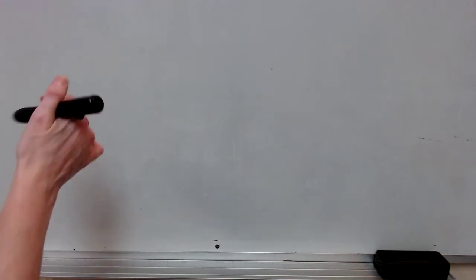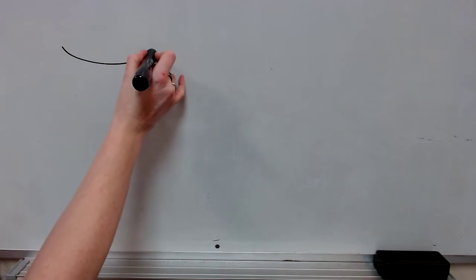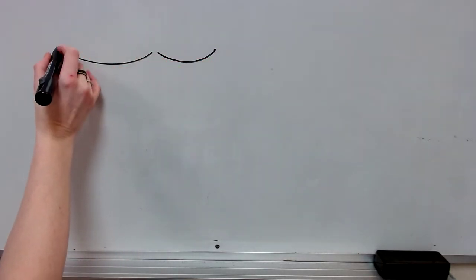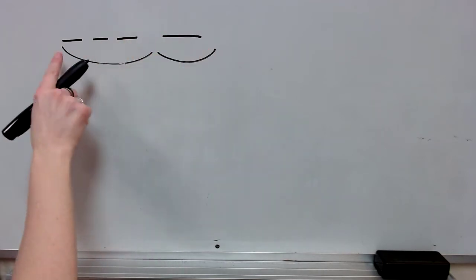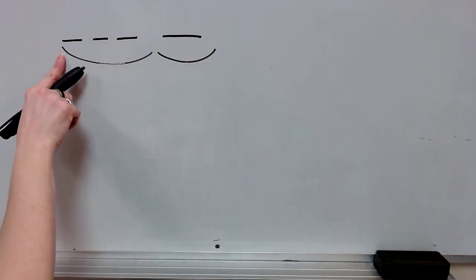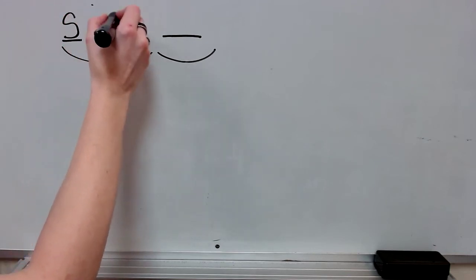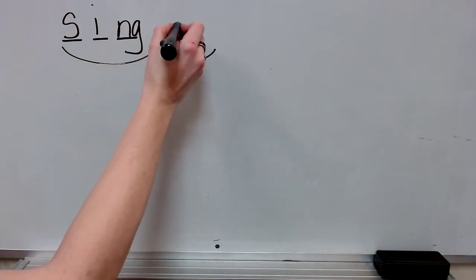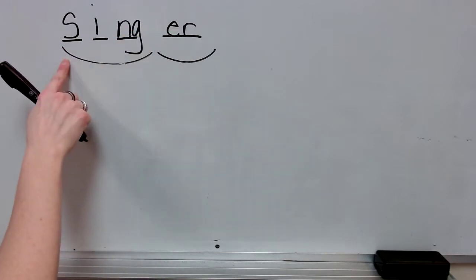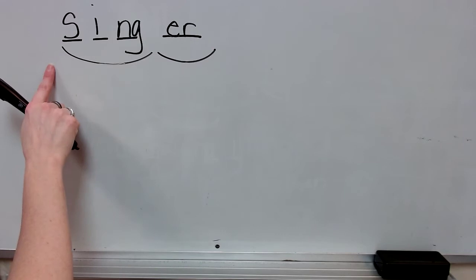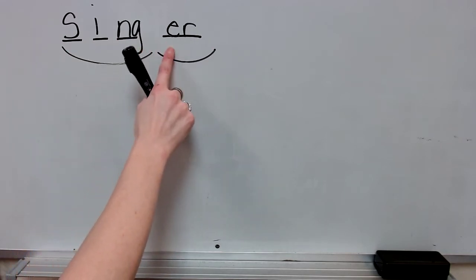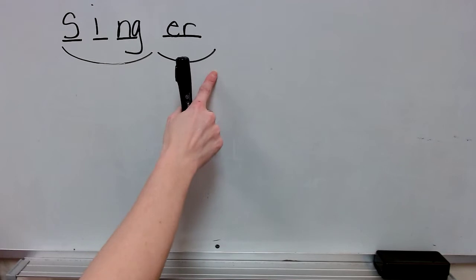Your first word to practice today is singer. Our base word is sing plus the suffix er. Write the spelling for singer: S-I-N-G-E-R. Check it and correct it. Spell singer. Yes, singer.